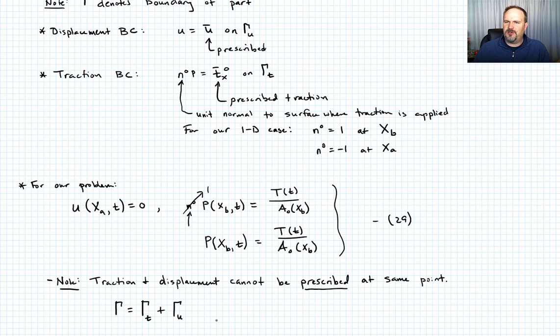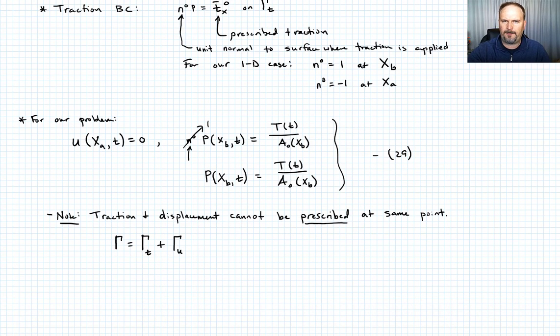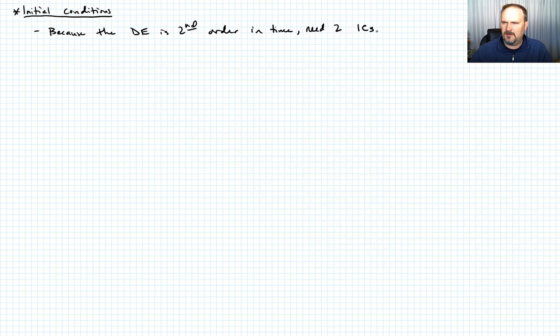What about initial conditions? We're trying to solve the equations of motion, which have a second-order derivative in x and a second-order derivative in time. That means we need two boundary conditions and two initial conditions.